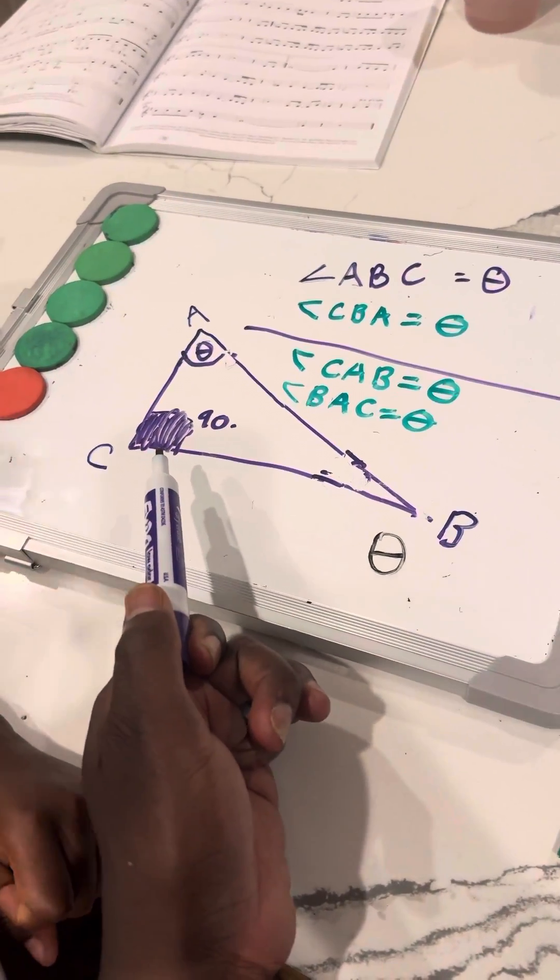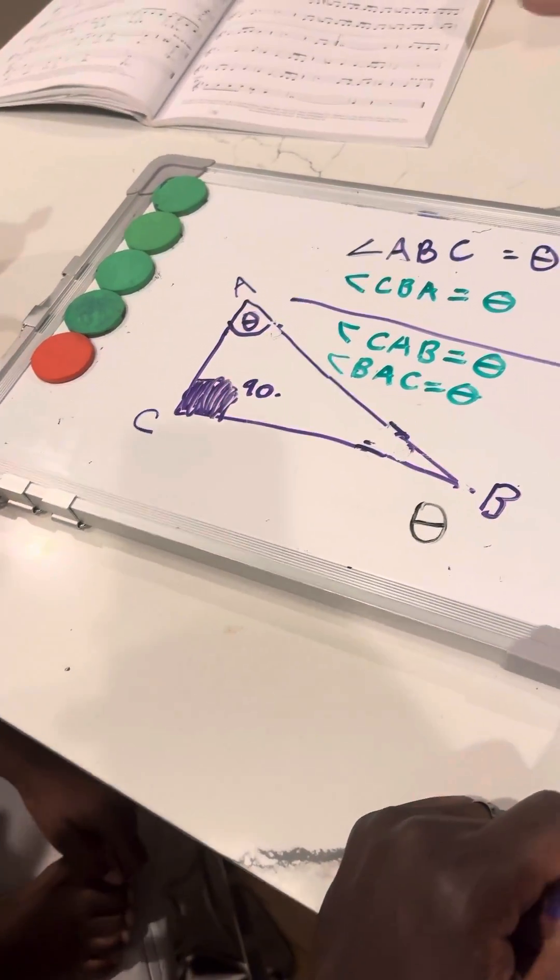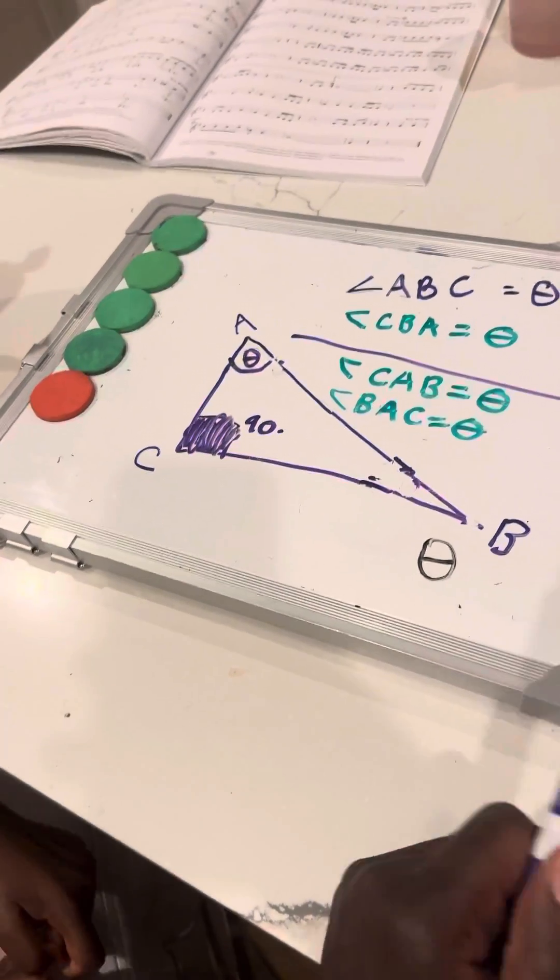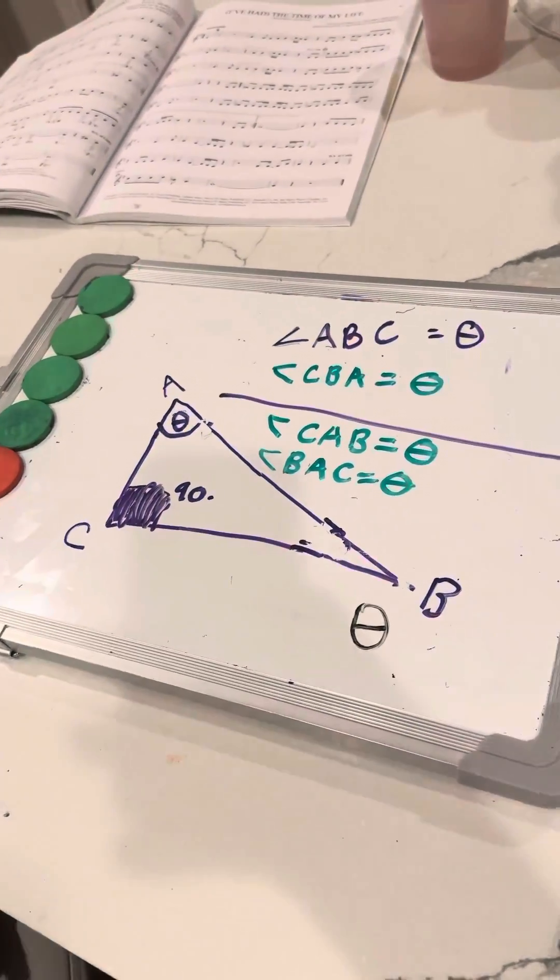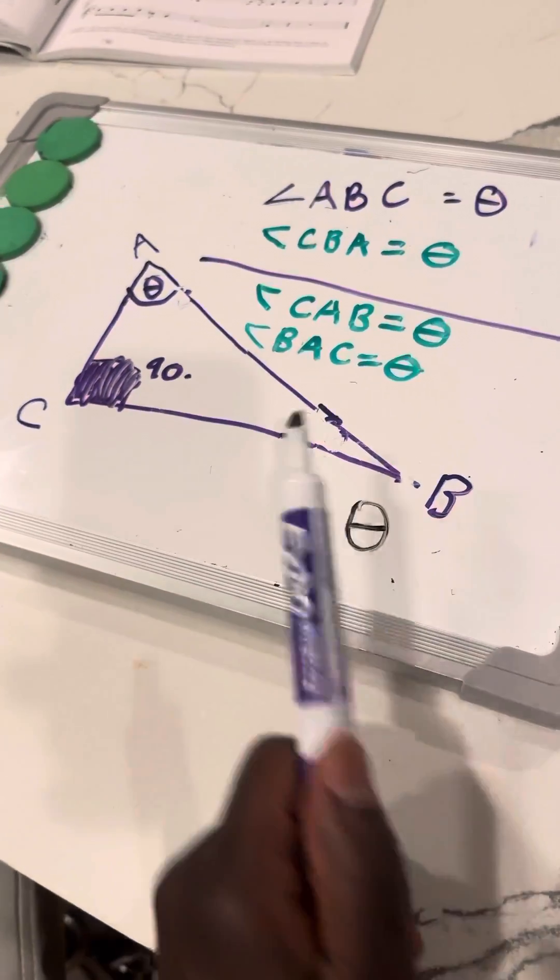Do we ever have to wonder what angle this is? No, because it's always a 90 degrees angle. Right? So then the only angles that we will consider theta are always going to be this angle and this angle.